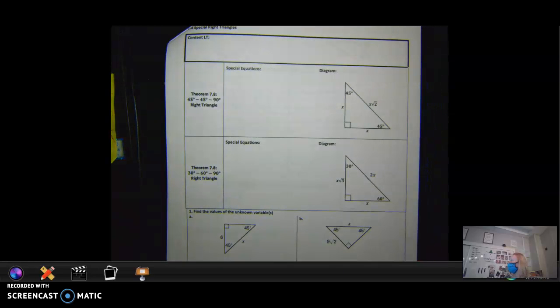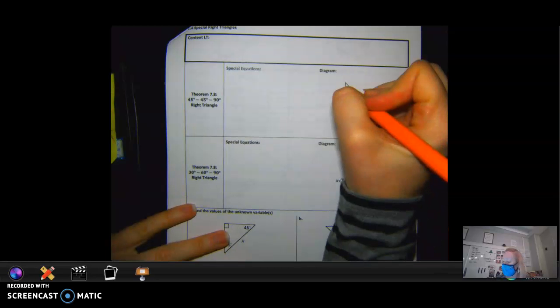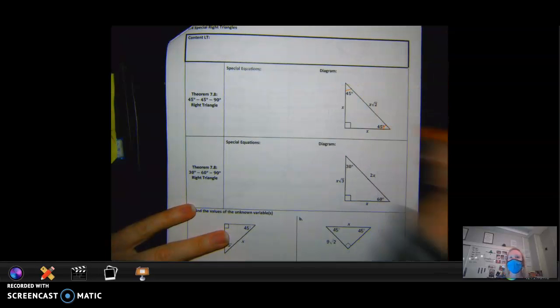So how this works is on a 45-45-90 triangle. That means that this angle is congruent to this angle, right?